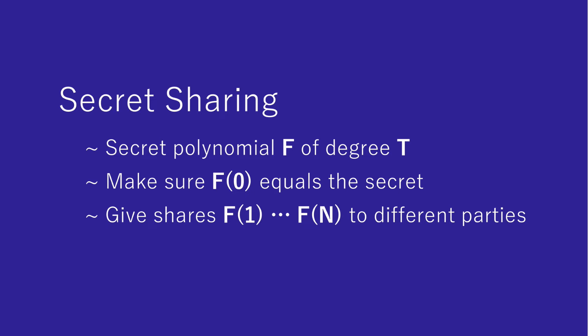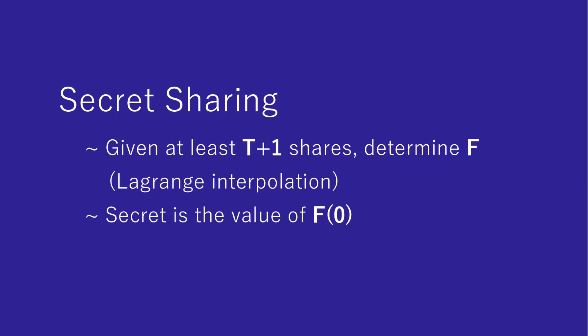We then give other points on that polynomial as shares to various people. If somehow at least t plus 1 shares are combined, it is possible to determine the unique shape of f using Lagrange interpolation, meaning that it is possible to find the secret value at f(0). If this does not ring enough bells, please check out the previous video first.